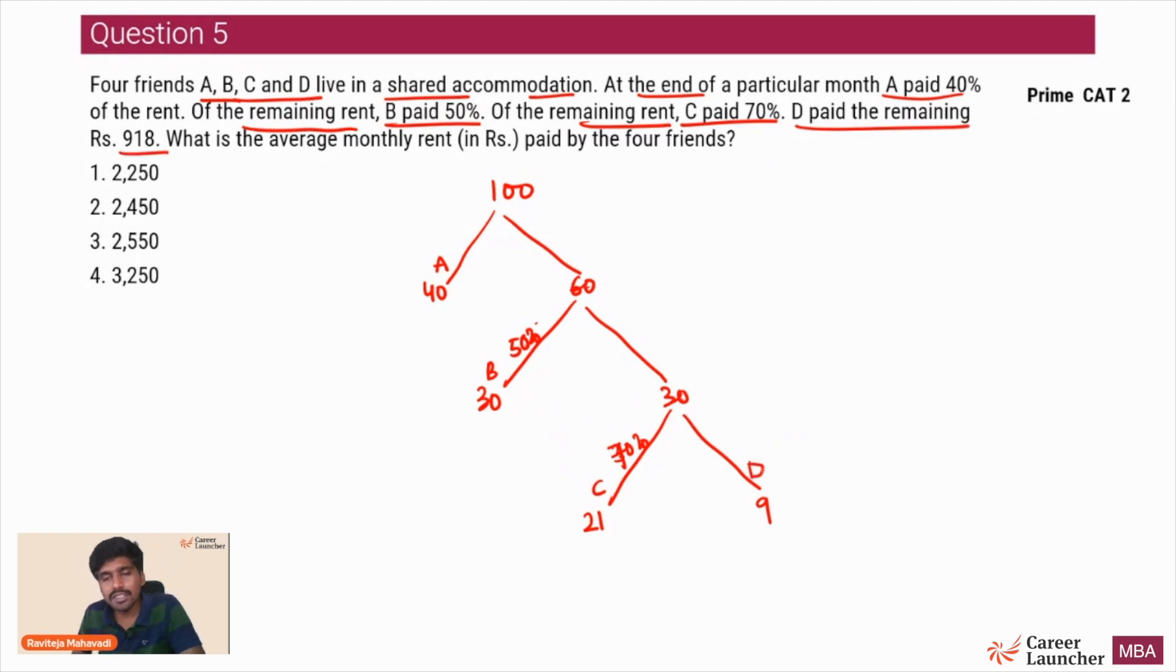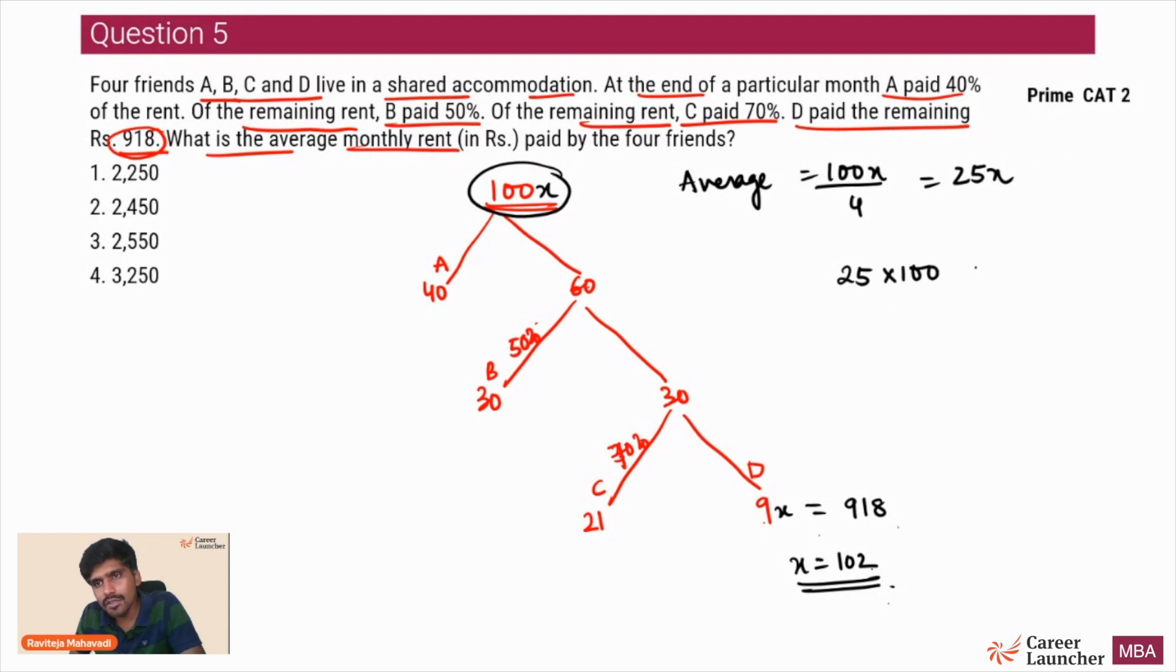D paid the remaining 918 rupees. This gentleman is D. D has paid 9 rupees. If out of every 100 rupees, D will pay 9 rupees. Now what is the question asking? If D paid 918 rupees, what is the average monthly rent? Not the total monthly rent, but average monthly rent. So if I assume the total monthly rent to be 100x, D would have paid 9x and 9x is given as 918. So if 9x is 918, x comes out to be 102. If the total rent is 100x, average rent will be 100x by 4, which is 25x. x is 102. Find out 25x - 25 into 100 plus 25 into 2 is 2500 plus 50, which is 2550 as the average rent paid by all of them.